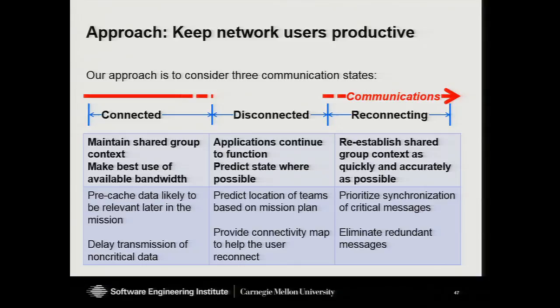When we're connected, the goal is to maintain group contacts — we want all our soldiers to be able to share information on their devices efficiently. Some things we might want to do include pre-caching data we might need in the future, akin to pre-loading map tiles as I'm driving down the road. We also want to possibly delay communication of non-critical data. If I'm conducting a search task and find a weapons cache, I can store that information locally and not waste network resources transmitting it immediately.